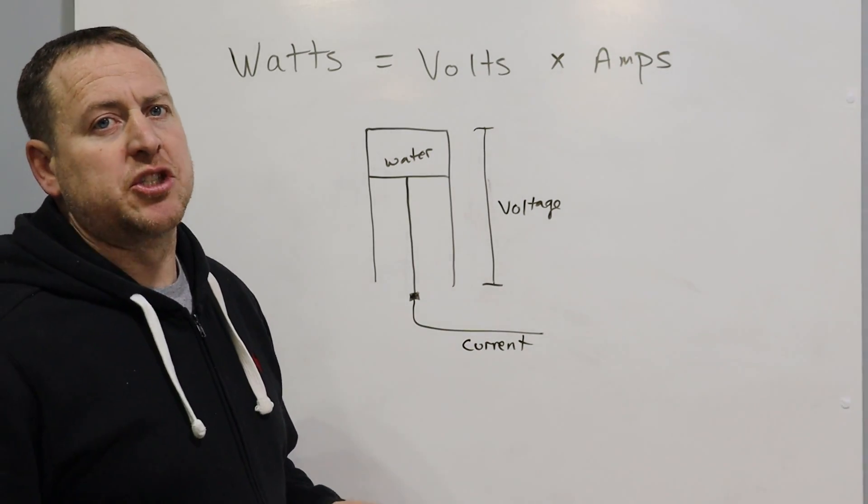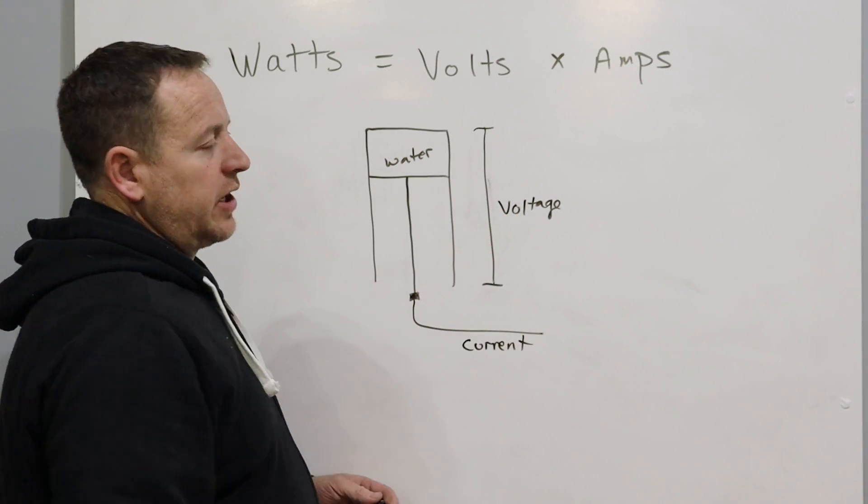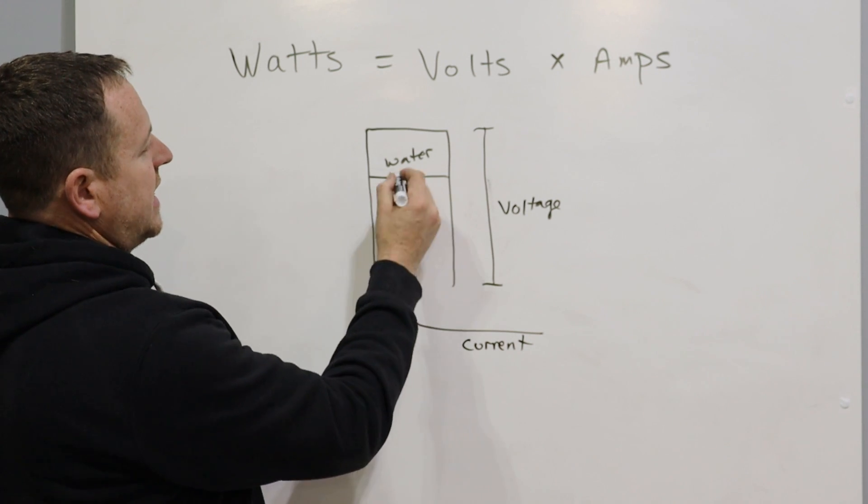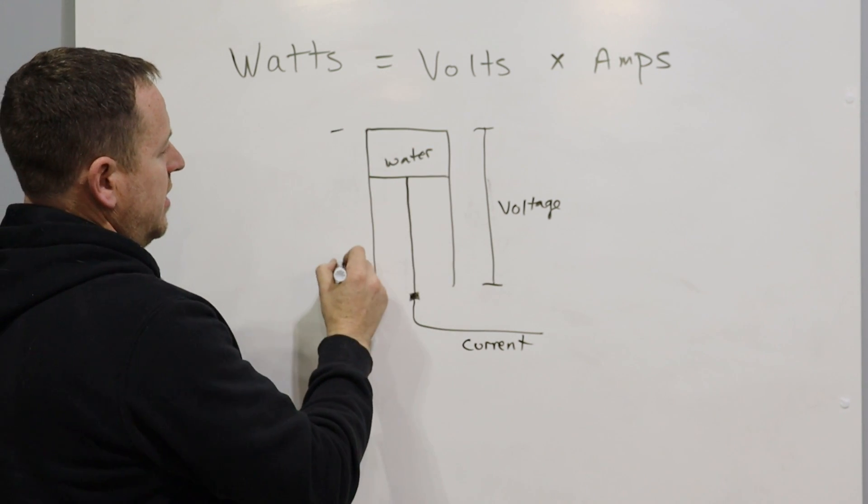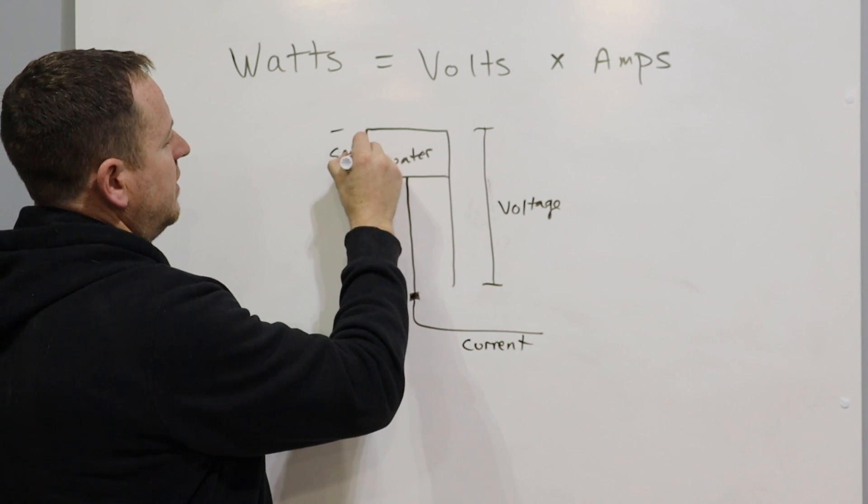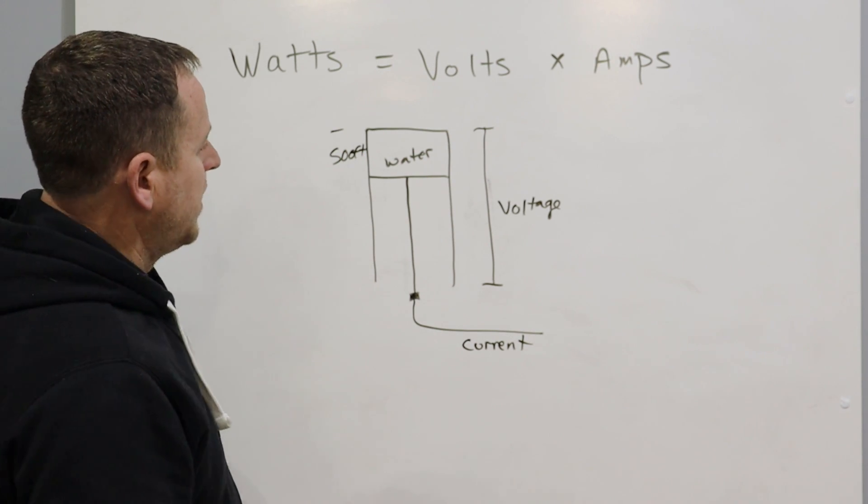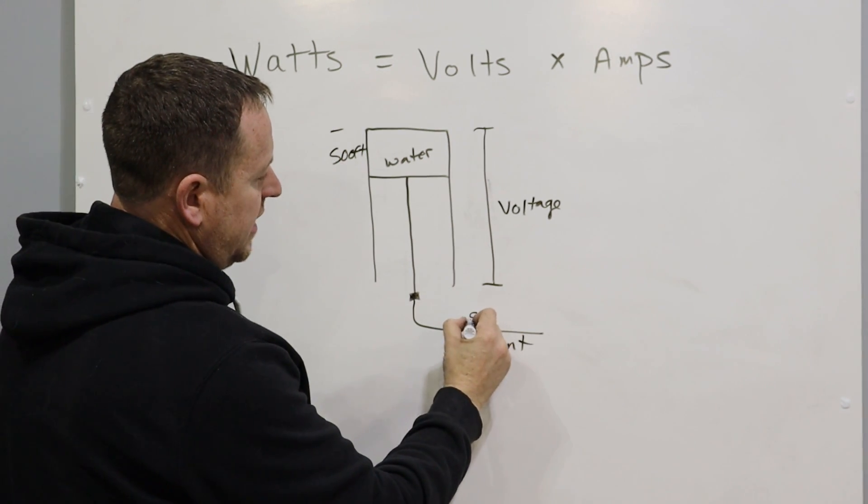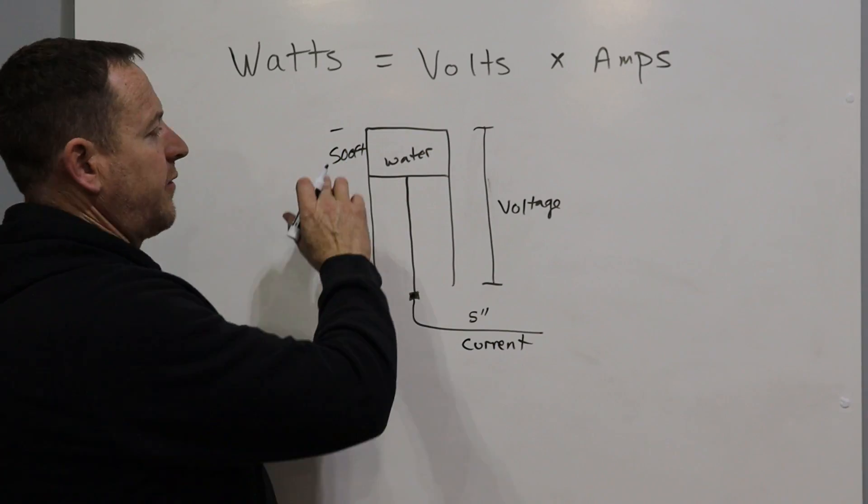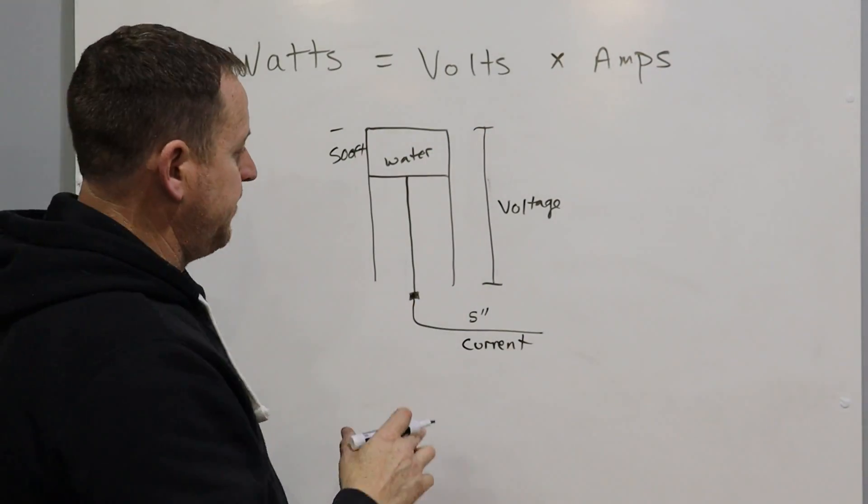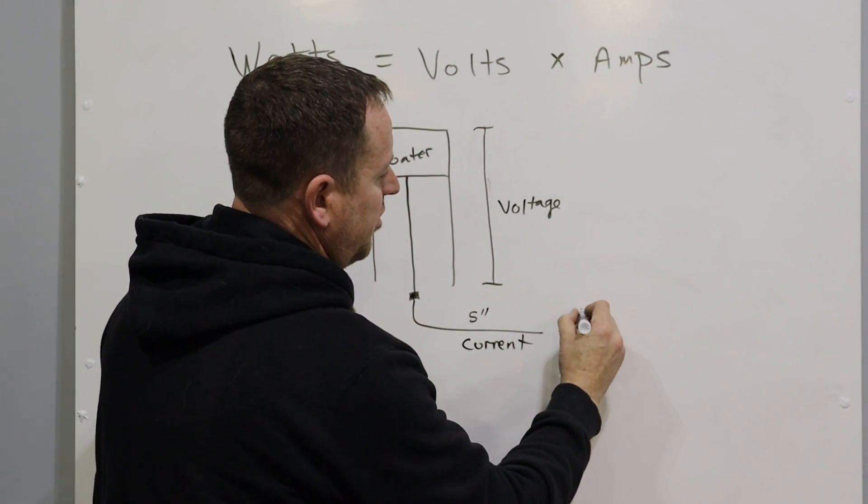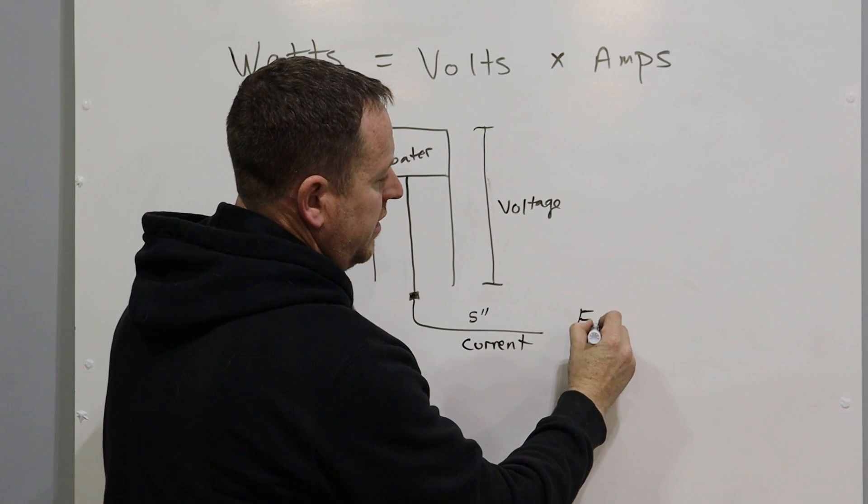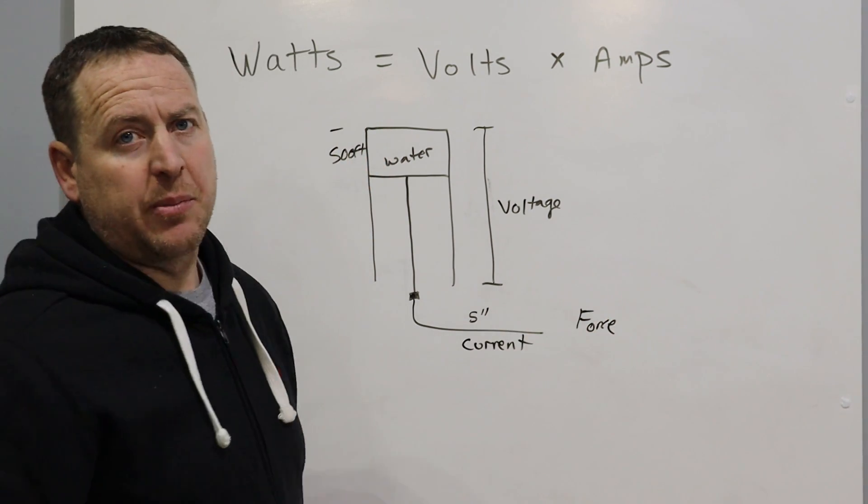But it is possible to change the voltage and the current and still get the same amount of wattage. Let's say that we have a water tower that's 500 feet tall, and then we have a pipe that's 5 inches. So with a 500 foot tall water tower and a 5 inch pipe, we get some sort of force of water coming out of the pipe.